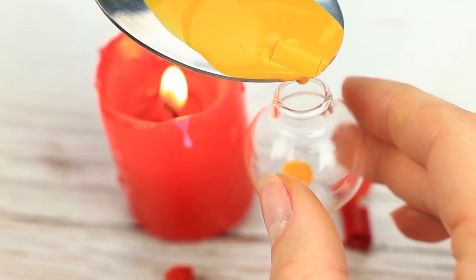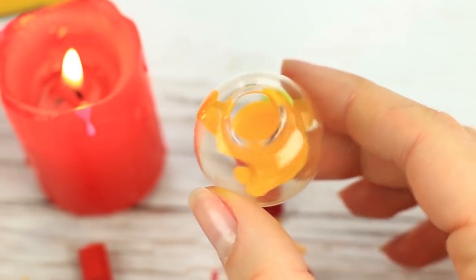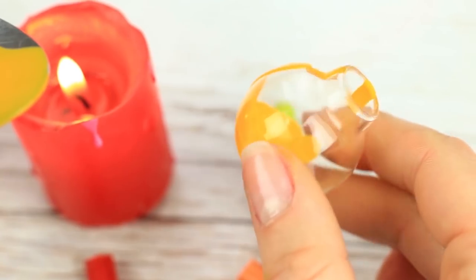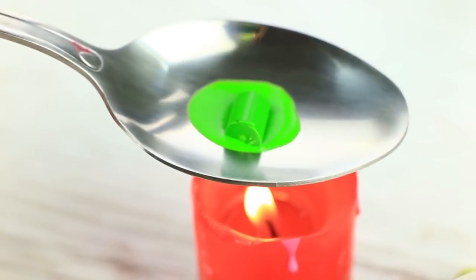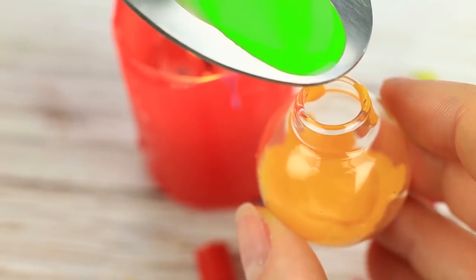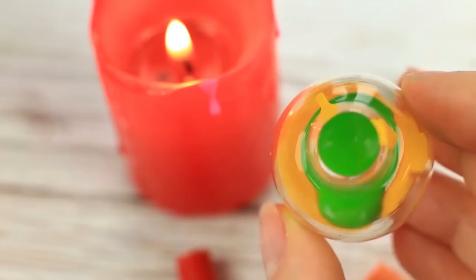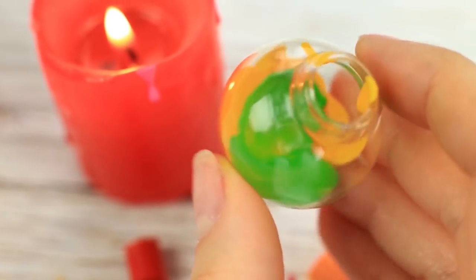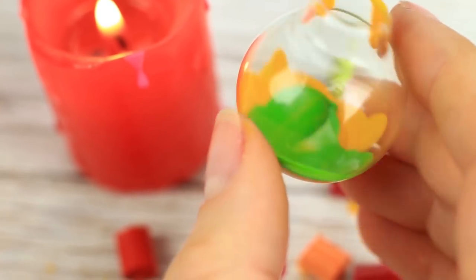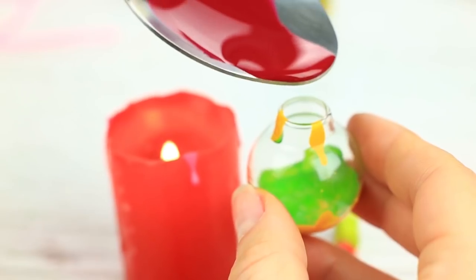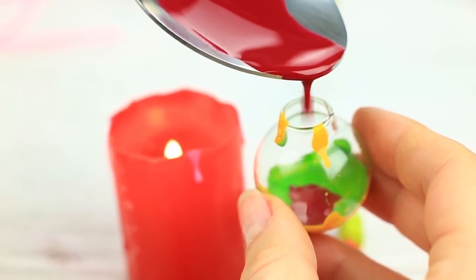Carefully pour the wax into a ball shaped jar. Tilt it and twist it to let the wax flow over the inside. Melt another color green. Add it on top of the yellow. Tilt the jar again to let the green wax flow over the yellow colors and the glass. Add the red wax on top. Spread it out.